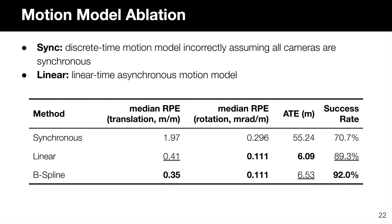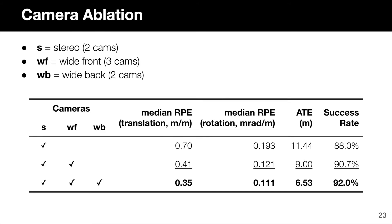We then perform a series of ablation studies. We swap the cubic B-spline model with a synchronous discrete-time model and an asynchronous linear model. Our results show that the cubic B-spline model in our method achieves the best performance overall. We next experiment with different camera configurations. Our results show that, as expected, having more cameras increases SLAM performance across the board. However, this only holds when the asynchronous nature of the problem is modeled — if the system does not account for this, more cameras does not automatically equal better.